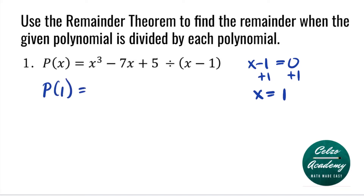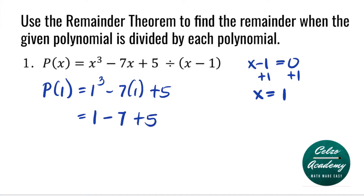To evaluate P of 1, we substitute 1 to all the X's. So we will have 1 to the third minus 7 times 1 plus 5. Simplifying: 1 to the third is 1 times 1 times 1, which is 1. Minus 7 times 1 is 7, and then we have plus 5. Simplifying from left to right: 1 minus 7 is negative 6, and negative 6 plus 5 is negative 1.